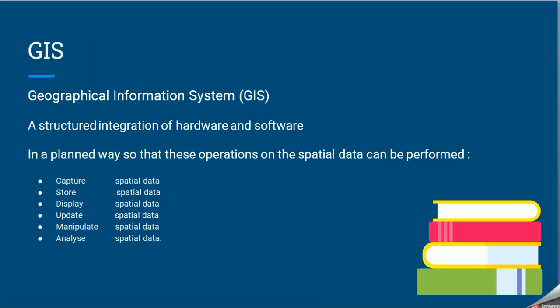What is GIS? GIS means Geographical Information System. It is a structured integration of hardware and software. It is a systematic way in which we talk about spatial data and its operations — for example, collecting spatial data, capturing it, storing it, displaying it, updating it, manipulating it, and analyzing it. All those things are studied and done in GIS.